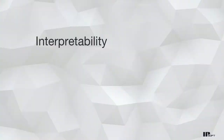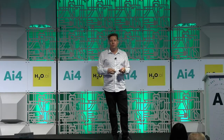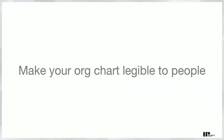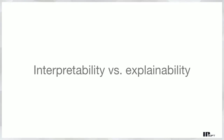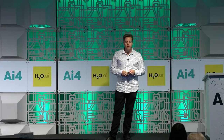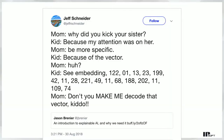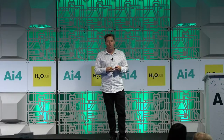Conversational agents are all about interpretability in human language. When we talk about making your org chart legible to people, that's what we mean by interpretability. I want to distinguish interpretability versus explainability — there was a keynote earlier about explainability, and I would tend to agree that explainability isn't necessarily what's needed. Interpretability is way more important. Here's a machine learning joke: the mom asks 'Why did you kick your sister?' and the child responds 'Because my attention was on her... because of the vector... see embedding 122, 01, 13, 23.' The kid is being very explainable, but it's not actually helpful to the mom to correct the action.